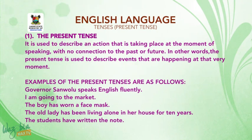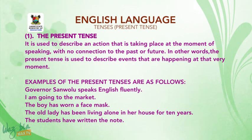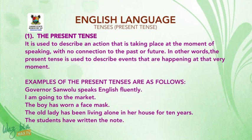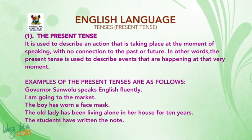Let's start with the present tense. It is defined as a word used to describe an action that is taking place at the moment of speaking, with no connection to the past or future. In other words, the present tense is used to describe events that are happening at that very moment — we can simply call it a moment action. Let us consider the following examples, which are all present tenses.